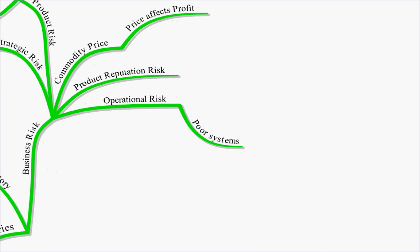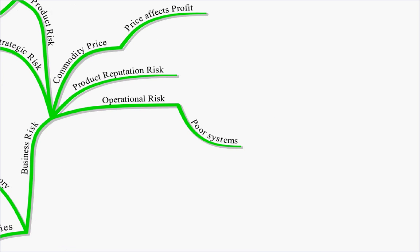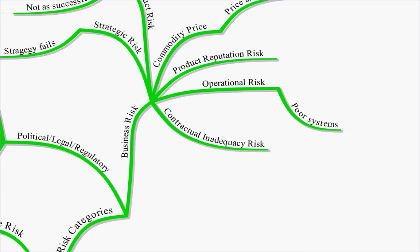Operational risk is the risk that you have poor systems in place and it leads to losses. And contractual inadequacy risk - have you got everything written into your contract to cover all aspects to ensure that the business doesn't make a loss on it.